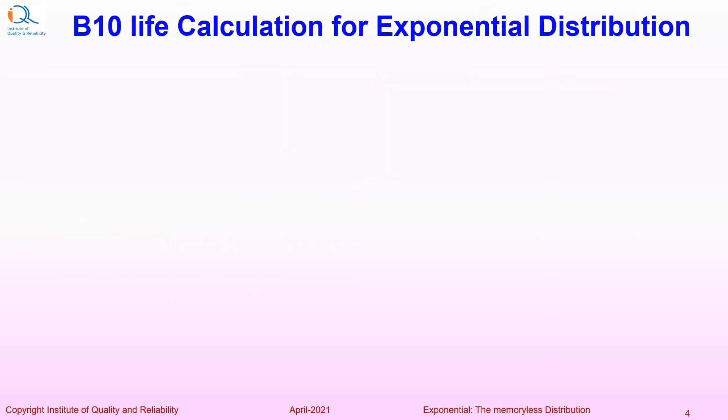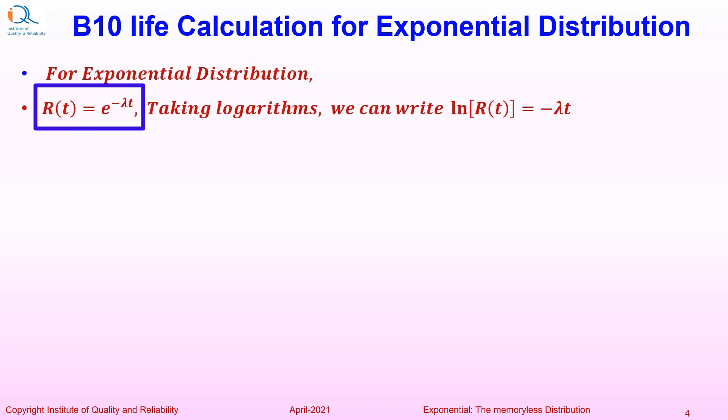Let us now see how to calculate B10 life for Exponential Distribution. For Exponential Distribution, reliability at time t equals e to the power minus lambda t, where lambda is the failure rate. Taking logarithms, we can write ln of reliability at time t equals minus lambda t.